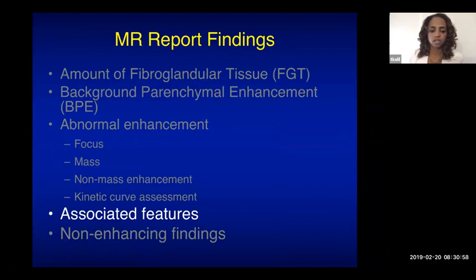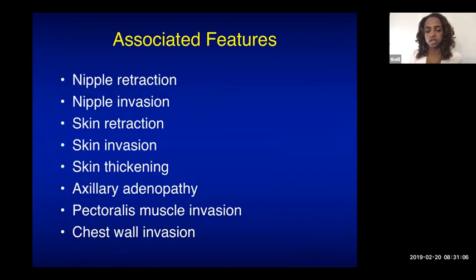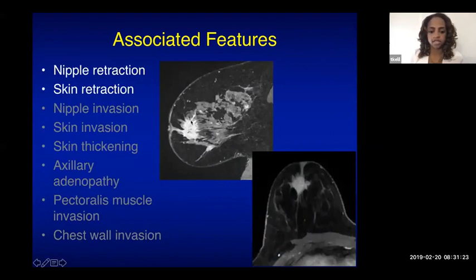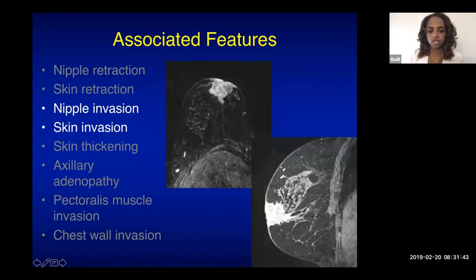After describing abnormal enhancement, look for associated features that raise suspicion for cancer or relate to prior surgery. Nipple and skin retraction should be noted when seen — a spiculated enhancing mass hugging the nipple is an example. Nipple and skin invasion are also important to report, as they may preclude the patient from a skin-sparing mastectomy.